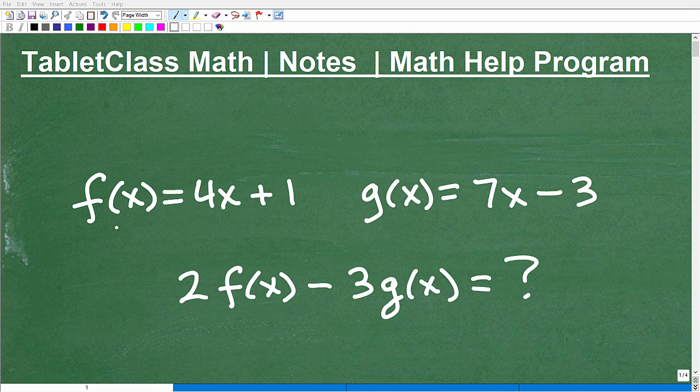Okay, let's take a look at this problem here. So what we have is two functions. We have this function f of x, and we have another function g of x. f of x is equal to 4x plus 1, and g of x is equal to 7x minus 3. And we want to figure out what 2 times f of x minus 3 times g of x is equal to.